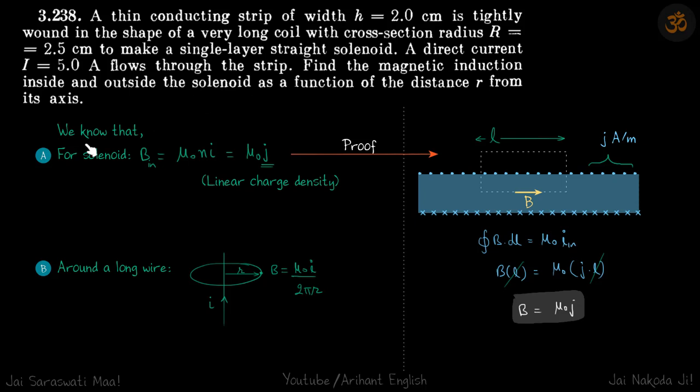Before attempting this question, we should know that the field around a long wire at a distance r is μ₀i/(2πr). And for a long solenoid, typical solenoid, B inside is μ₀ni, which can also be written as μ₀j, where j is linear current density.